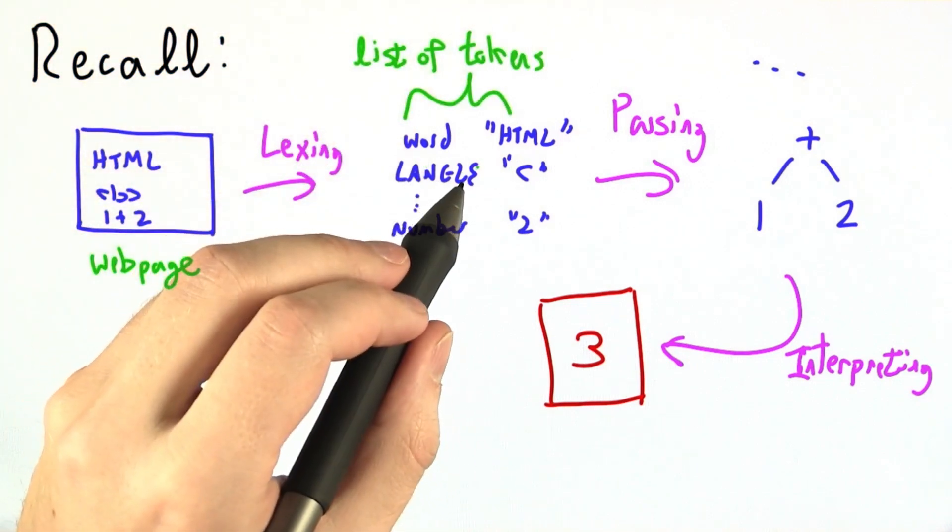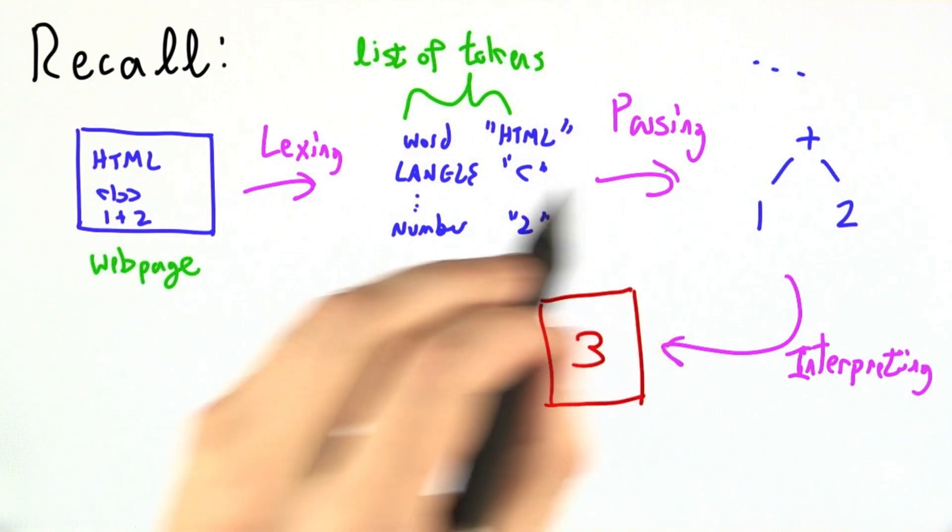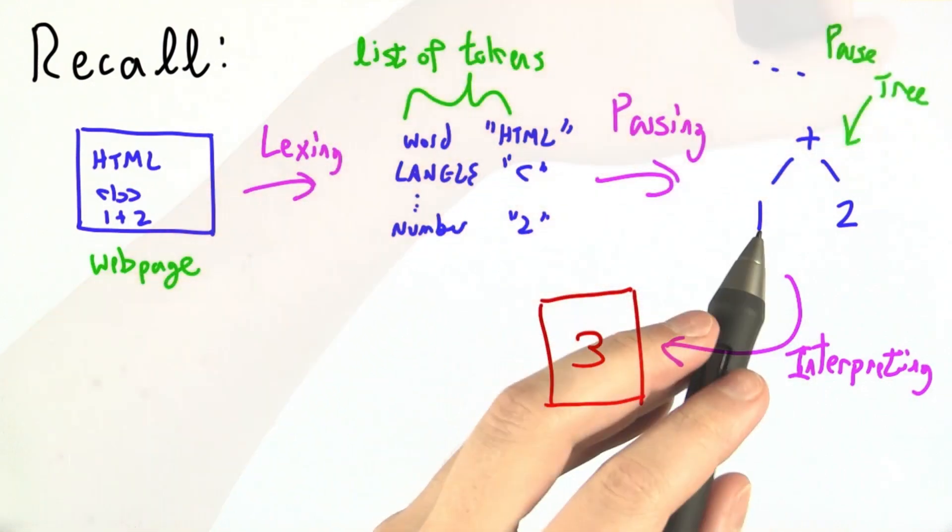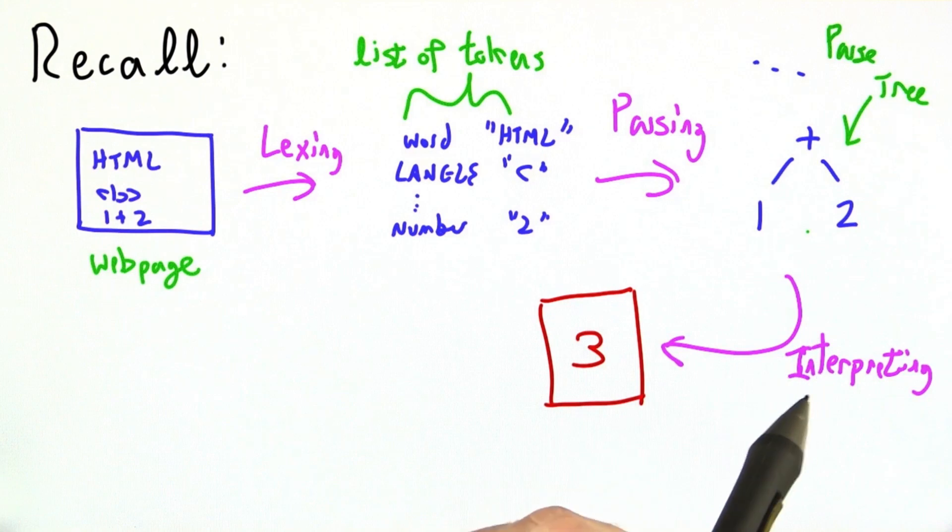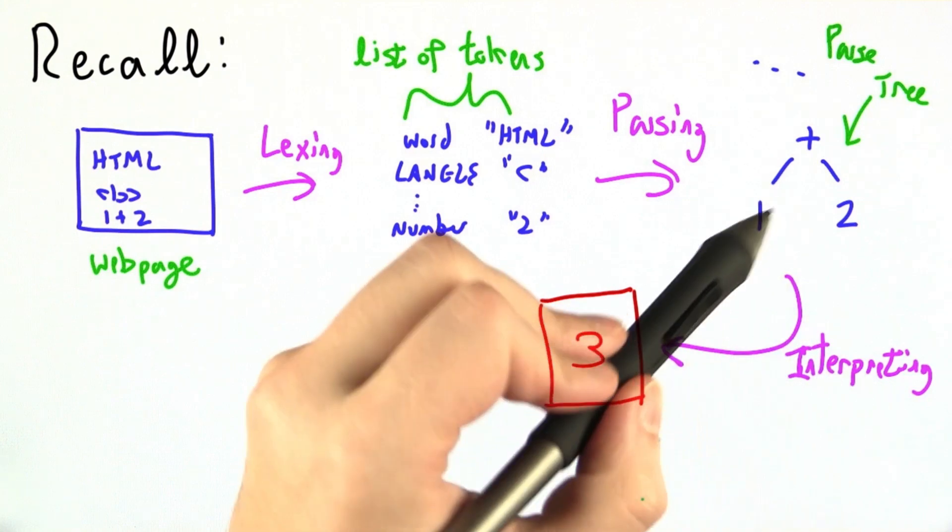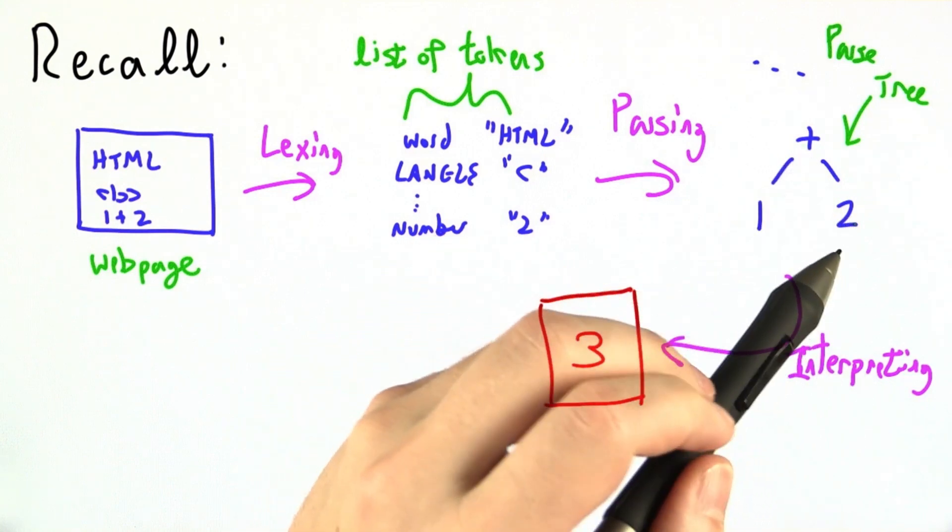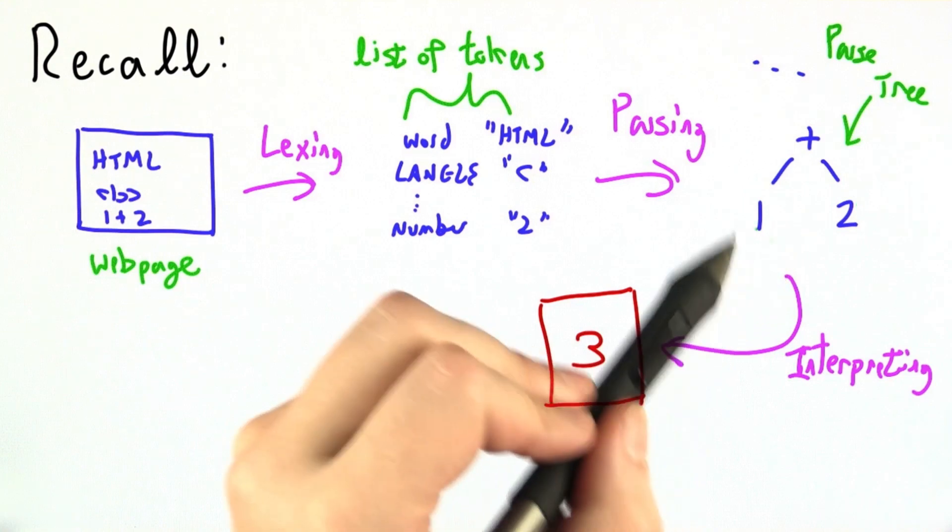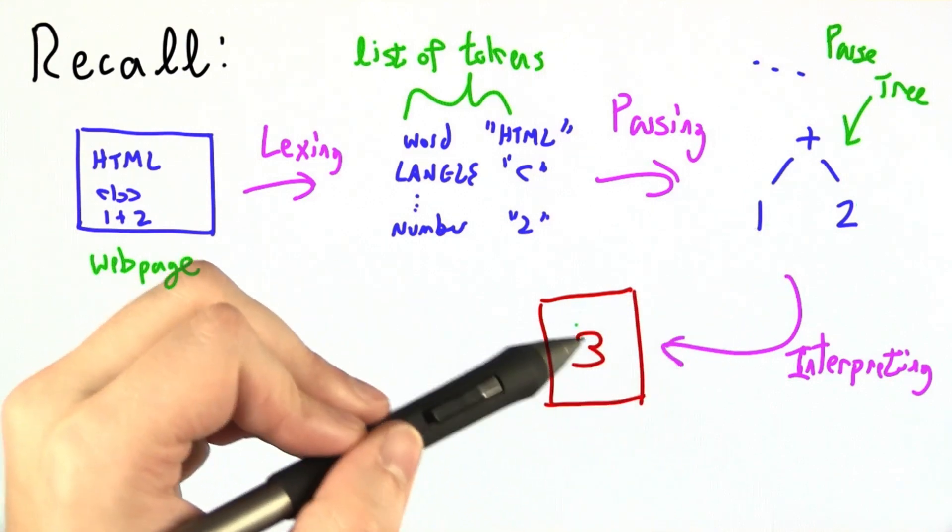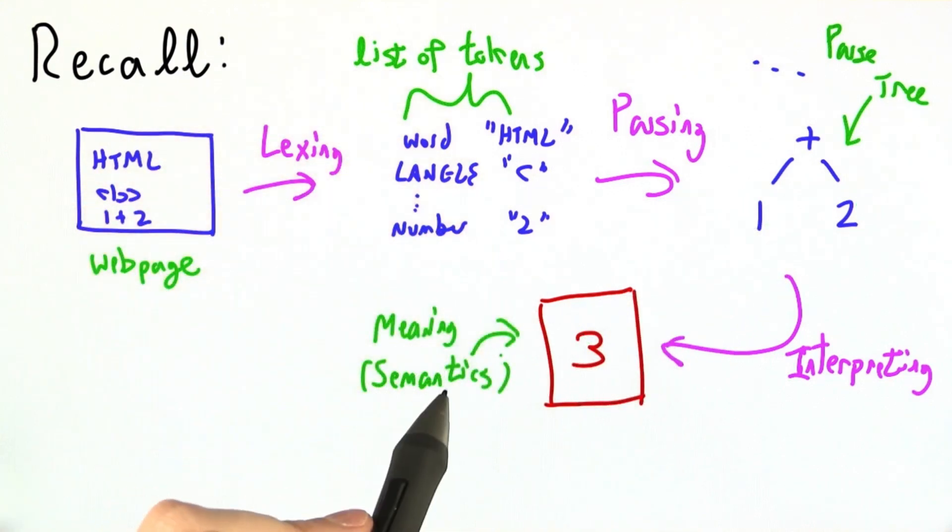Once we had that list of tokens, we did parsing to check those tokens against a formal grammar and produce a parse tree. More recently, we've learned how to do interpreting to walk up and down a parse tree with an environment and figure out what the final result is supposed to be. We often call that meaning or semantics.